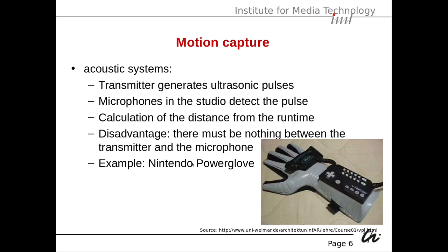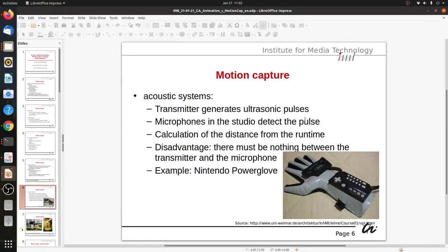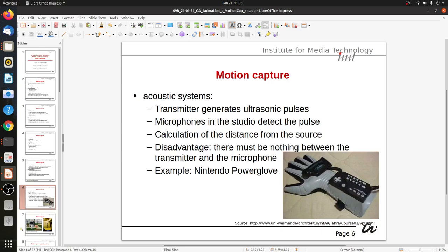Acoustic systems use a transmitter that generates ultrasonic pulses and microphones in the studio that detect the pulses, basically like sonar. The distance is calculated from the runtime from the sound source. The disadvantage is there must be nothing between the transmitter and the microphone. An example is the Nintendo Power Glove, which is somewhat bulky.